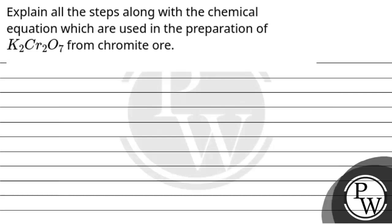Hello Batcho. Let's read the question. Explain all the steps along with the chemical equation which are used in the preparation of K2Cr2O7 from chromite ore. The key concept for this question is preparation of K2Cr2O7 from chromite ore.